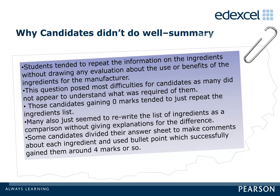Summary — why candidates didn't do well: students tended to repeat the information on the ingredients without drawing any evaluation about the use or benefits of the ingredients from the manufacturer's perspective. This question posed most difficulties for candidates as many did not appear to understand what was required. Those gaining zero marks tended to just repeat the ingredients list. Many also seemed to rewrite the list of ingredients as a comparison without giving explanations for the differences. Some candidates divided their answer sheet to make comments about each ingredient using bullet points, which successfully gained them around 4 marks.